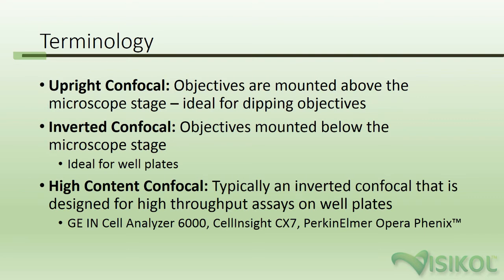With an upright confocal, the objectives on the microscope are mounted above the tissue that is to be imaged. An upright confocal can use dipping objectives which allow for a substantial imaging depth into tissues. However, these devices are limited in imaging cell cultures and some well-plate-format tissues.